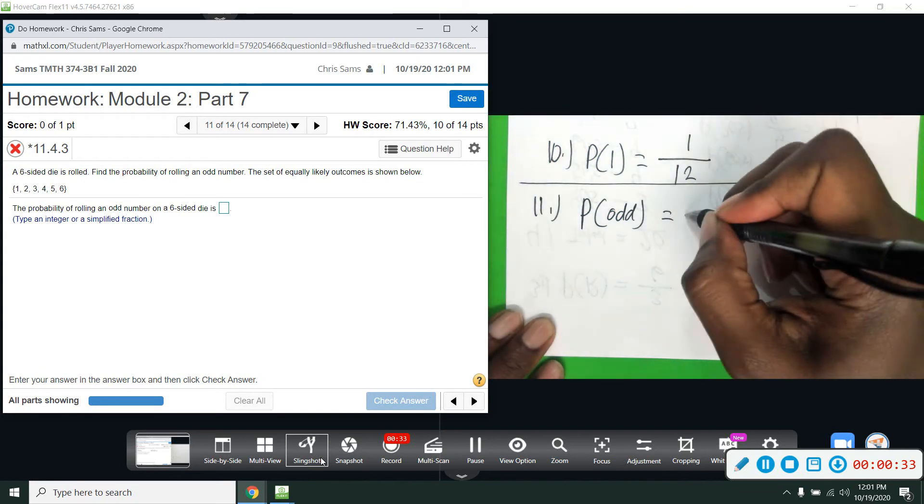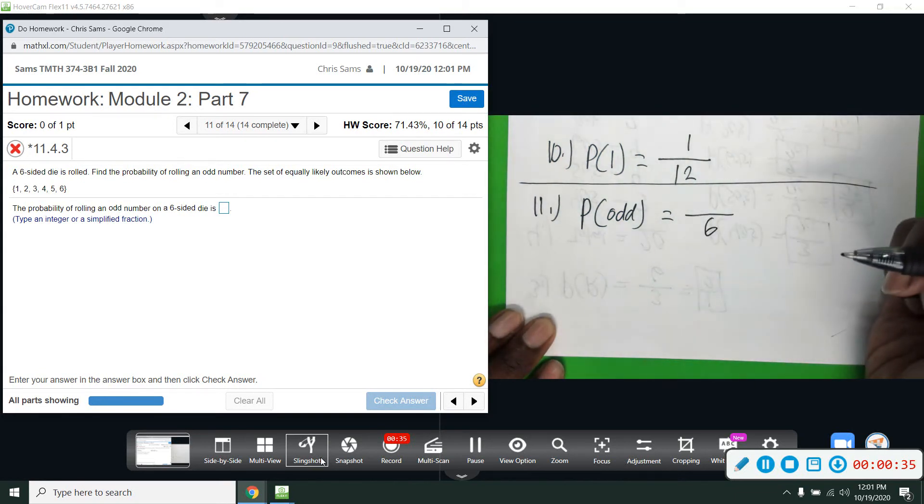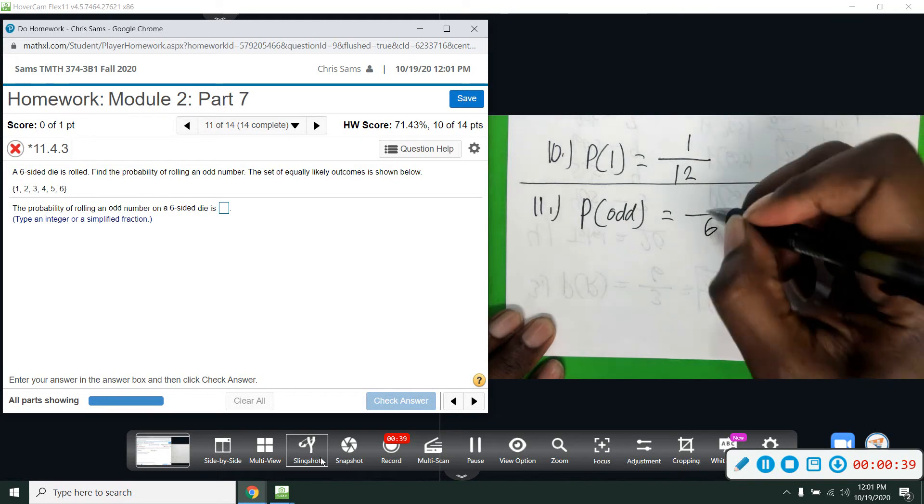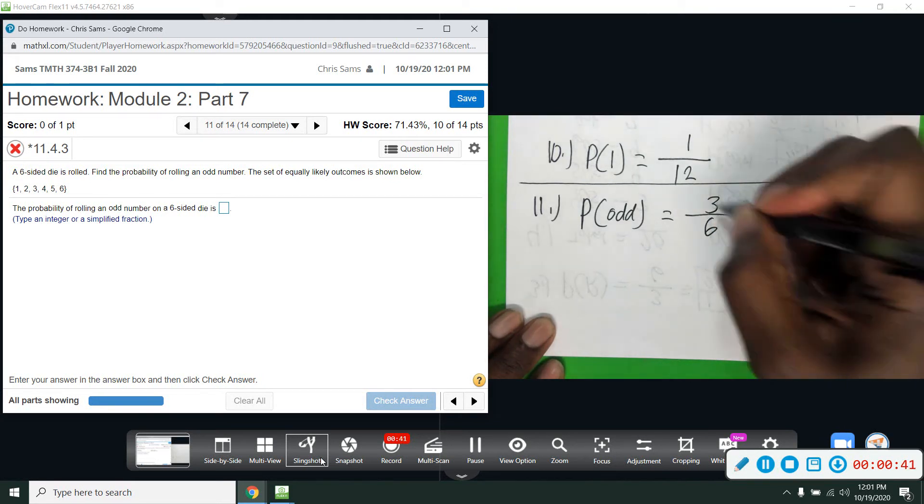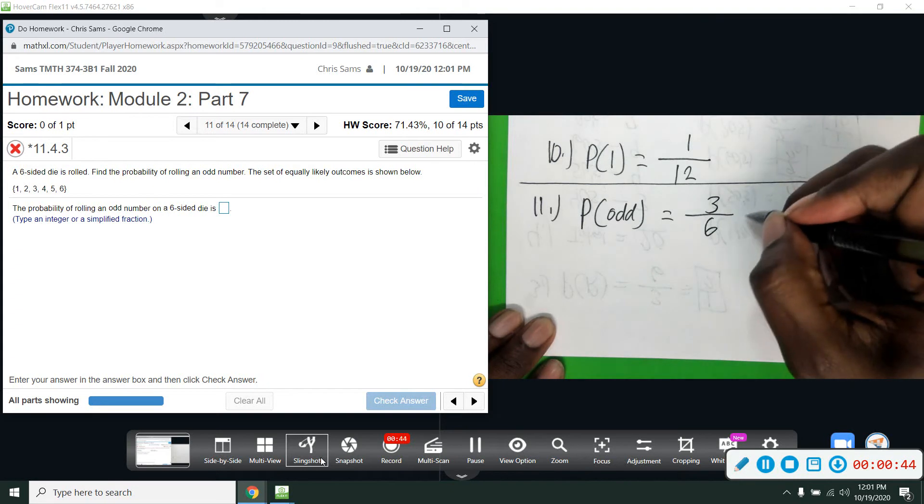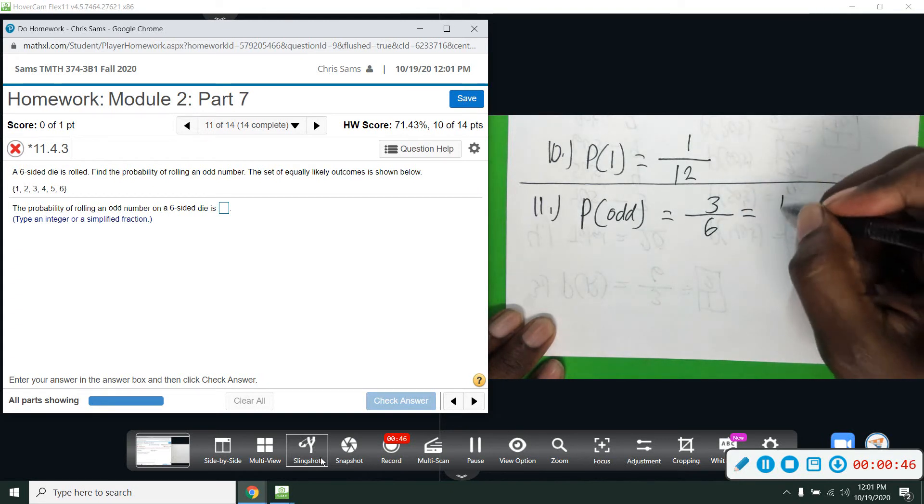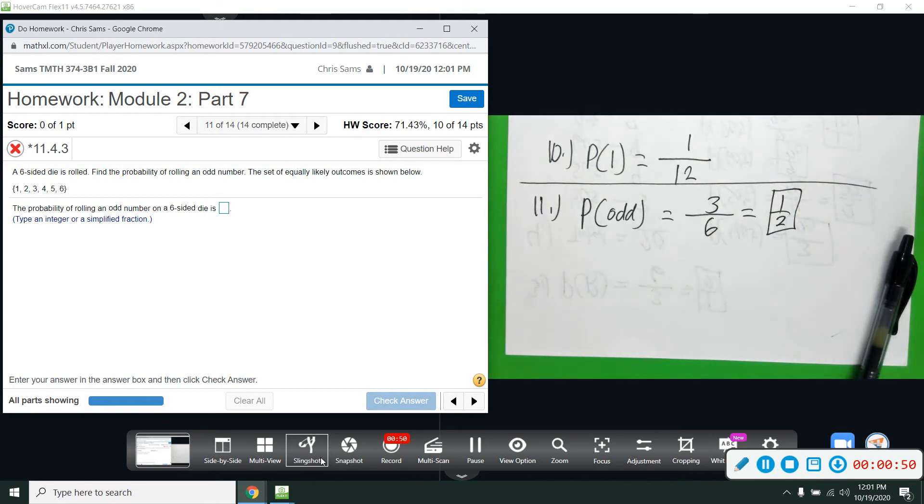All right, so out of six numbers—1, 2, 3, 4, 5, and 6—there are three odd: 1, 3, and 5. So there's three numbers that are odd: 1, 3, and 5. And three out of six will reduce to one-half. So half the time we're expected to roll an odd number.